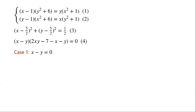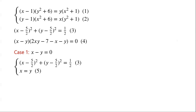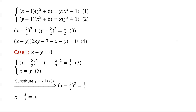Case 1: X − Y = 0. We have the system: (X − 5/2)² + (Y − 5/2)² = 1/2 (equation 3), and X = Y. Substituting Y = X into equation 3, we have (X − 5/2)² = 1/4. So X − 5/2 = ±1/2, giving X = 2 or X = 3. So (X, Y) = (2, 2) or (3, 3).